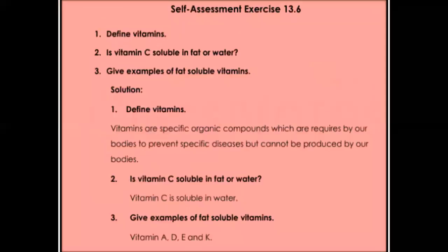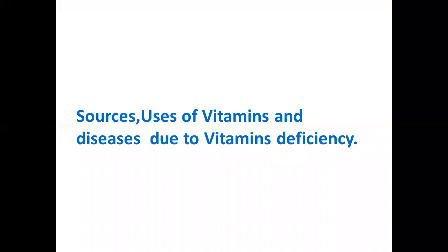Self-assessment exercise 13.6: define vitamins. Vitamins are specific organic compounds which are required by our body to prevent specific diseases but cannot be produced by our bodies. Question two: is vitamin C soluble in fat or water? Vitamin C is water-soluble — remember the fat-soluble ones are DAKE: D, A, K, E — there is no C. Give examples of fat-soluble vitamins: vitamins A, D, E, and K are the fat-soluble vitamins.